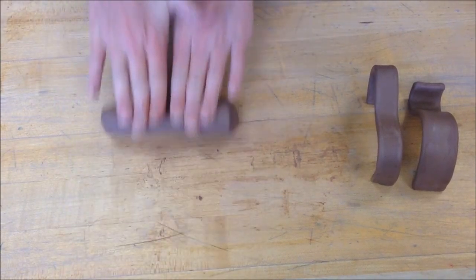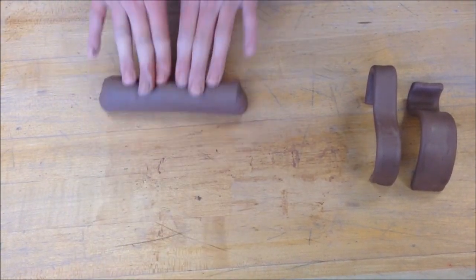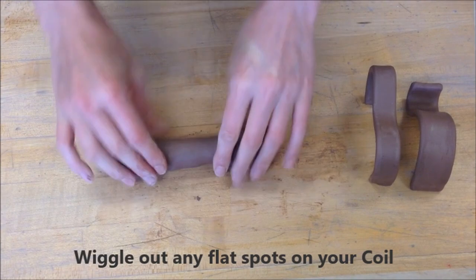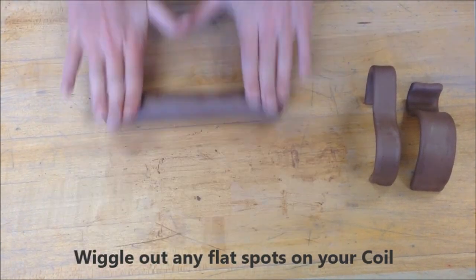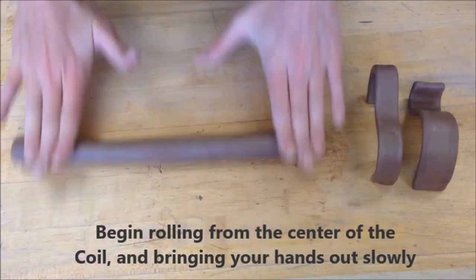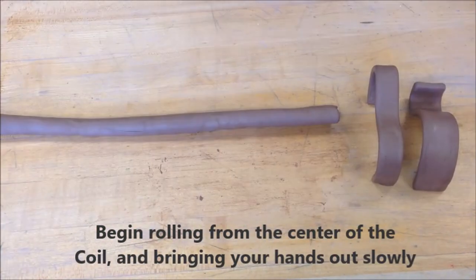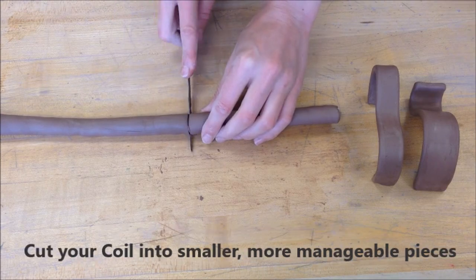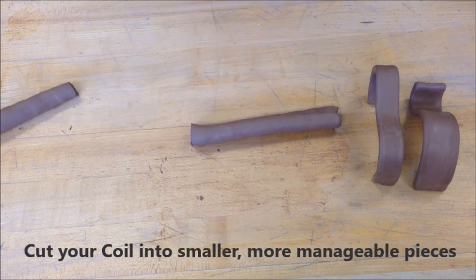Now let's look at coil construction. As you're rolling out your coils, if you're getting flat spots, make sure to wiggle those out. Roll from the center of the coil, bringing your hands out slowly, and don't be afraid to cut your coil into smaller, more manageable pieces to make it easier to work with.